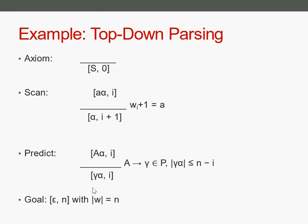Then we have the predict rule. If we have a non-terminal symbol at the beginning of the stack, and that non-terminal symbol is a left-hand side of a production rule of our grammar, then we can replace it — the right-hand side is symbolized by gamma, which can be an arbitrary combination of terminals and non-terminals. So we are exchanging the non-terminal on the stack with whatever the right-hand side is, to derive our new item.